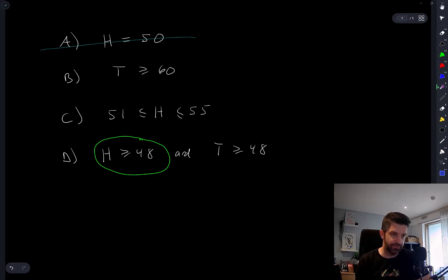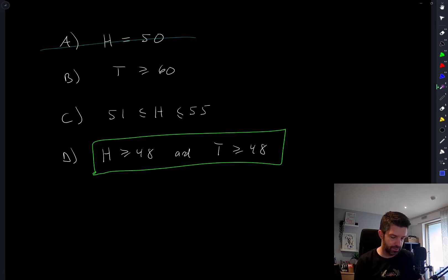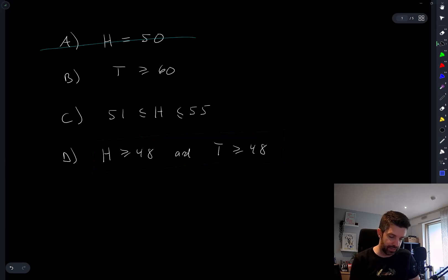H greater than or equal to 51 happens 50% of the time. Oh, wait a minute, now this is a, there's like, you can't have H equal 60 and T equal 60, right? This is the same as, if H is greater than or equal to 48.